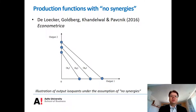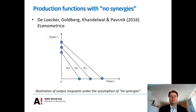Another paper where synergies are ignored is by De Loecker et al., which appeared in Econometrica a few years ago. In their approach, they do not need apportioning based on revenue shares; however, it still assumes away synergies. Their approach is illustrated in the diagram in this slide. They look at a two-output setting using data from India, where they can observe both single-output firms that specialize in one output or the other, and also multiproduct firms.